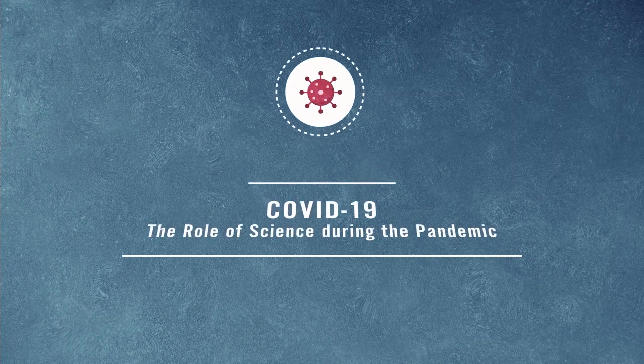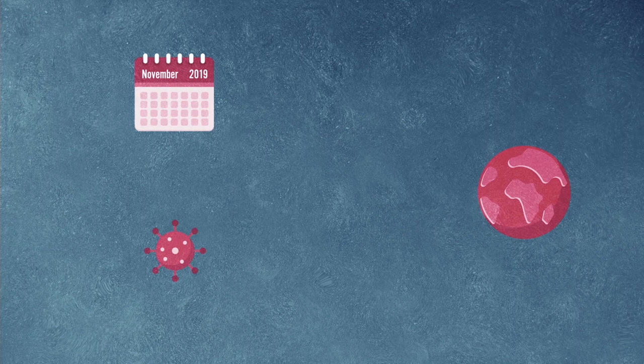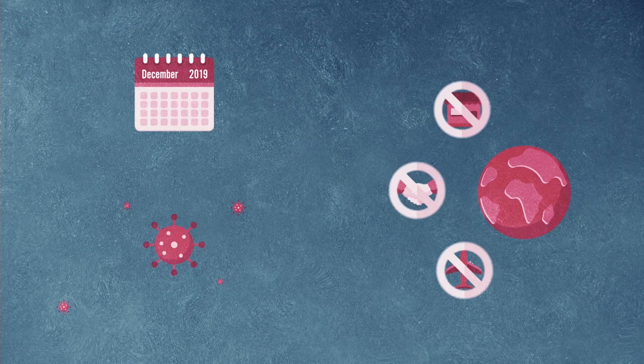COVID-19 – The Role of Science During the Pandemic. Chapter 1 – Investigating a New Type of Virus. In late 2019, a new type of coronavirus began to spread across the world. The spread would have a huge impact on every area of society and of our lives.